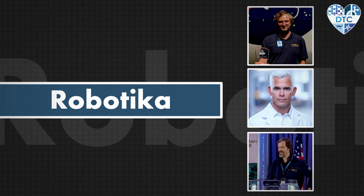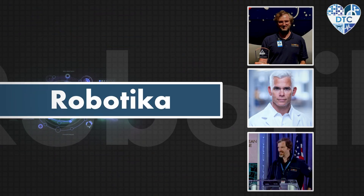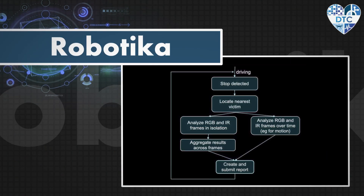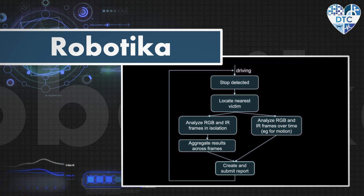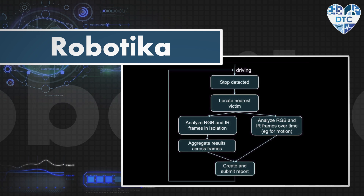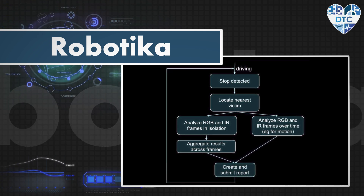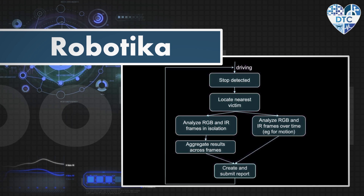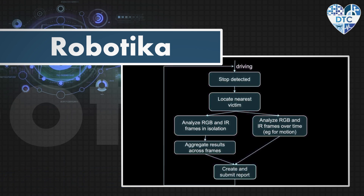Team Robotica is made up of experts in triage and medical care, along with robotics and computer science. Their approach is to select the shortest path visiting all victims, detect each stop and the victim observed, use the sensor suite to determine status, and report findings.